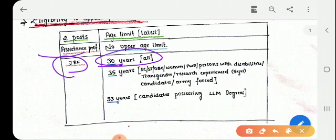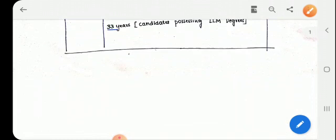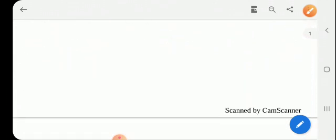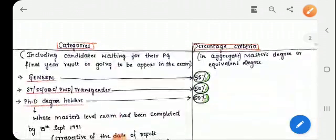If you are LLM degree candidates then you can apply for writing the NET examination till 33 years of your age. For rest of others it is 30 years for JRF but for NET, that is assistant professor, no upper age limit.